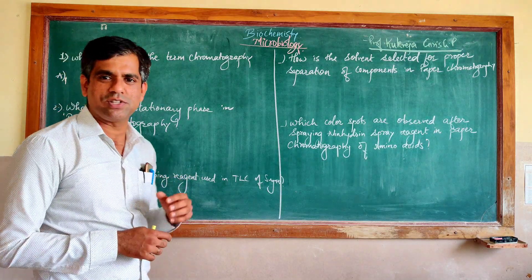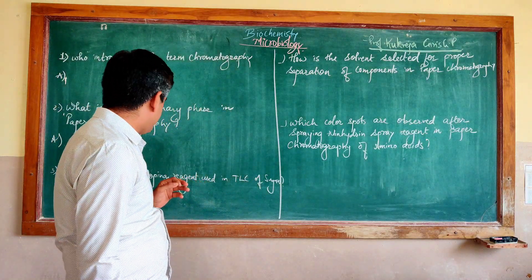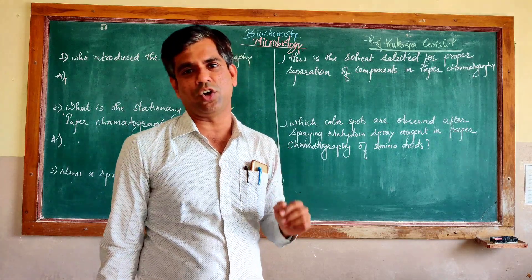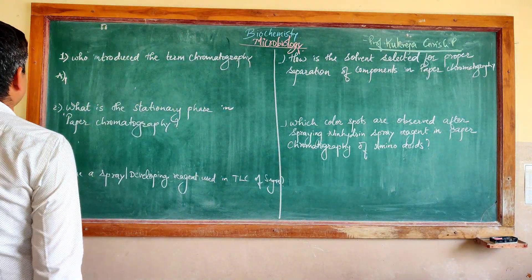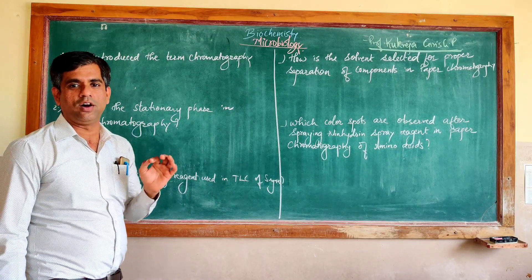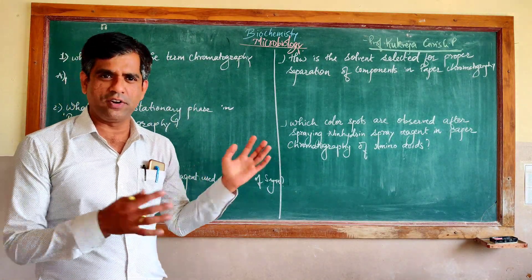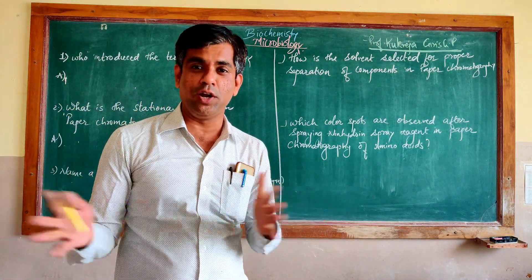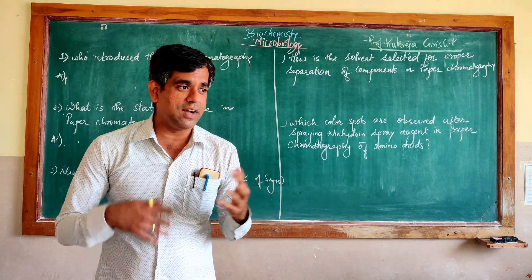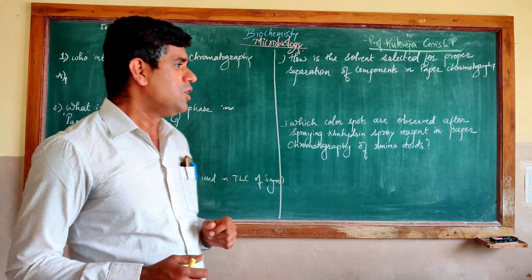Let us go with today's series of questions. It seems more of biochemistry — you can see the word chromatography many times. So it is related with chromatography. We have different types: paper chromatography, column chromatography, thin layer chromatography, and advanced versions like HPLC, GLC and many more.